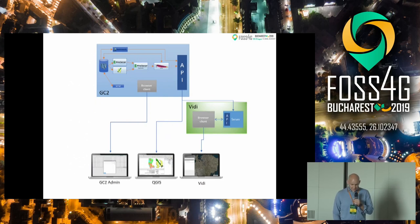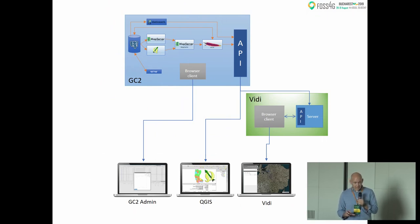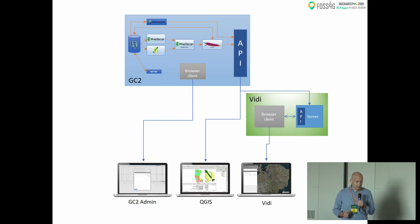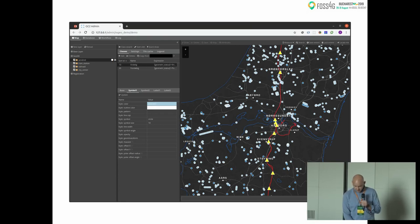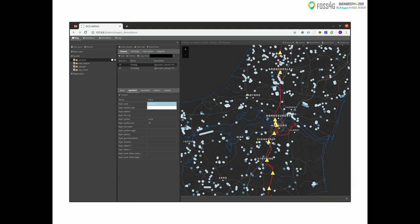This is a schematic representation of GC2. The light blue box at the top is GC2 with all the software components inside, and at the bottom you can see client computers. There is GC2 admin, which I will show you shortly. QGIS can also act as a client, and to the right we have Vidi, the browser-based GIS. The green box shows that Vidi is actually a standalone system with its own server backend. This is the GC2 admin application, where you do the configuration of MapServer, MapCache, and more.